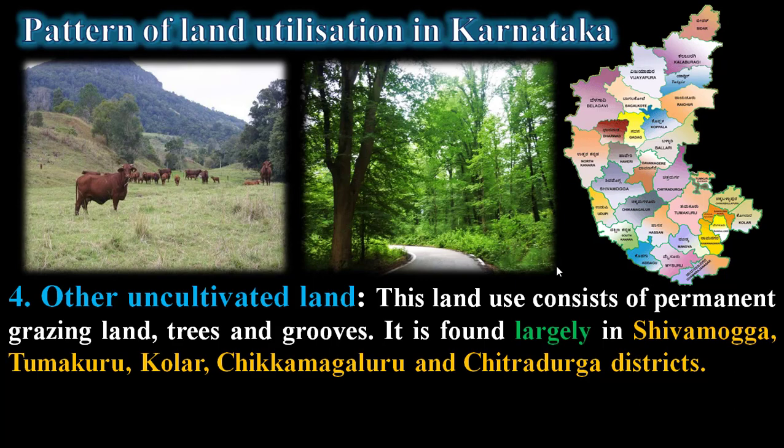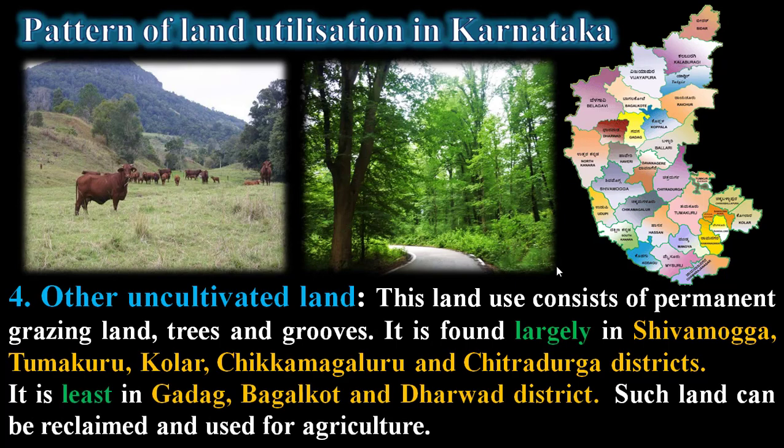The fourth pattern is other uncultivated land. This land consists of permanent grazing land covered with trees and groves — a long narrow channel is called a grove. It is found largely in Shivamogga, Tumakuru, Kolar, Chikkamagaluru, and Chitradurga districts. The least other uncultivated land is found in Kodagu, followed by Bagalkot and Dharwad districts. Such land can be reclaimed and used for the purpose of agriculture.